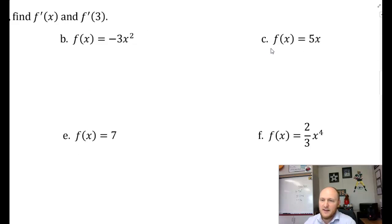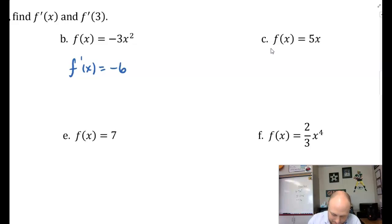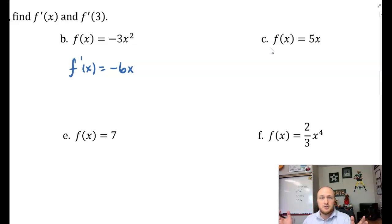Part B: f of x is equal to negative 3x squared. For f prime, I multiply by the power — negative 3 times 2 is negative 6 — giving x to the power of 1. You don't have to write x to the power of 1, so f prime of x equals negative 6x. There's your derivative.